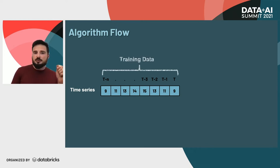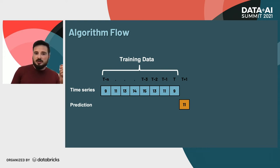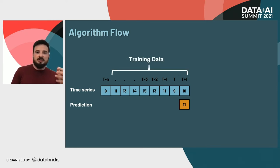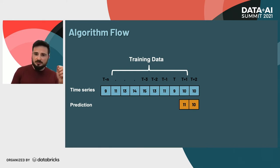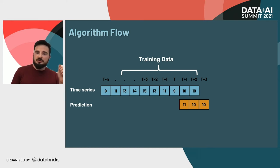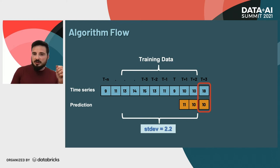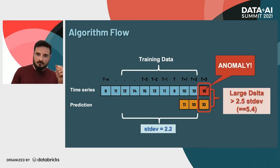So let's see how our algorithm flow works. We take the first n observations, train our model, and predict the first value — in this case 11. We compare it with the real value, which is 10. They're within the allowed standard deviation boundaries, so we don't alert. In sliding window mode, we take the next n observations, train again, and predict the next value. Again, the difference between real and predicted is within bounds. But on the third iteration, we predict 10 and the real value is 18 — the standard deviation is higher than the allowed boundaries, so we alert on this observation as an anomaly.